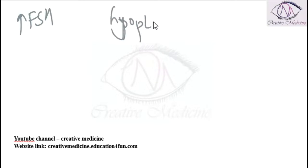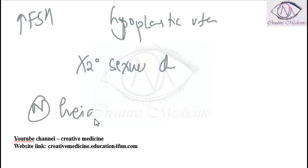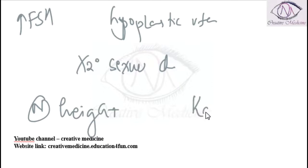Secondary sexual characters are absent in pure gonadal dysgenesis. The main difference from Turner syndrome is that in pure gonadal dysgenesis the patient has normal height and the additional features of Turner syndrome are absent. The best investigation for pure gonadal dysgenesis is karyotyping.